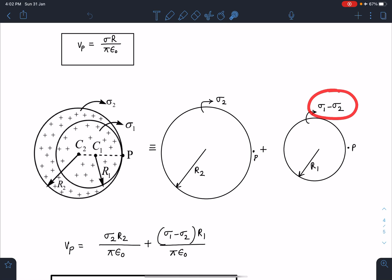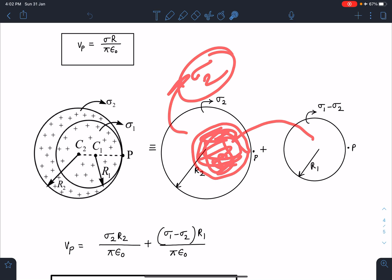So when I overlap this here like this, in this part charge density will become sigma 1, and here it will become sigma 2.